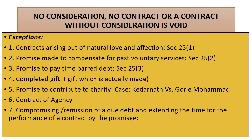One important thing to remember: there is no natural love and affection during the time of quarrel. Law will not presume natural love and affection during quarrel, and any agreement made during quarrel is not considered as valid. Point number two: promise made to compensate past voluntary services. If a person promises to pay something to another person for any voluntary services done in the past, that is a valid contract even though nothing moved from one of the parties.